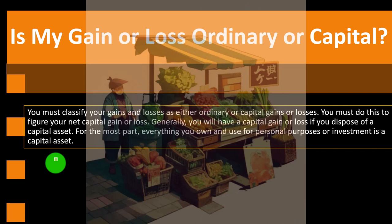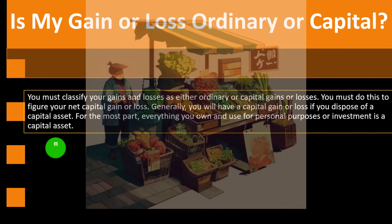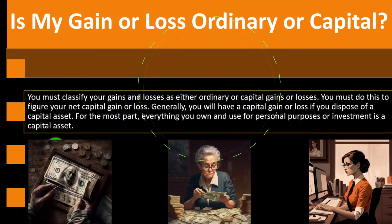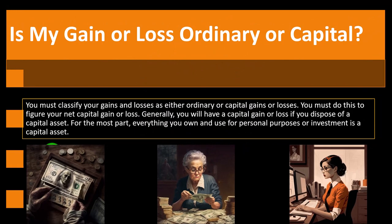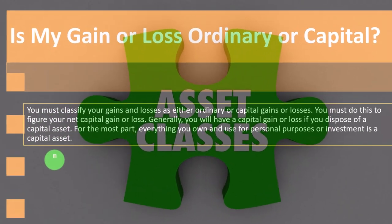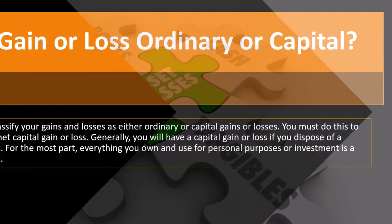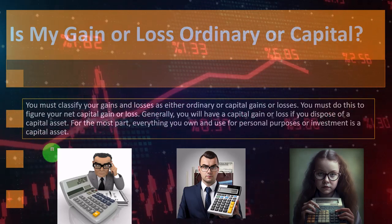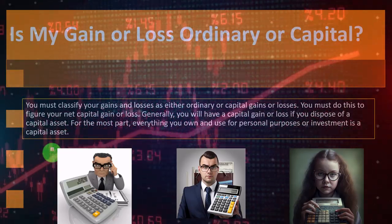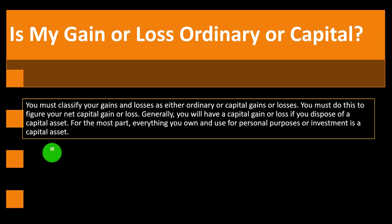You must classify your gains or losses as either ordinary or capital gains or losses. This is where it gets complex because we have a progressive tax system. Ordinary income is taxed at multiple rates and is usually higher than capital gains rates. Capital gains is what we typically think of when selling stocks and bonds — there may be a favorable rate. But selling property could also result in a capital gains situation, and now you've got this difference in taxes.